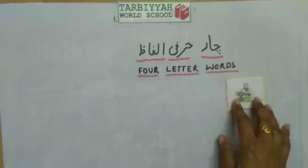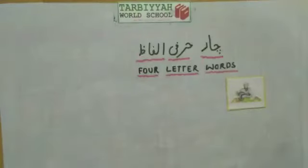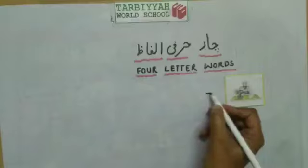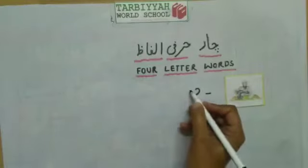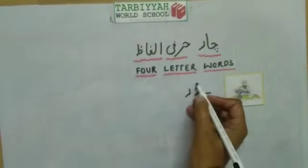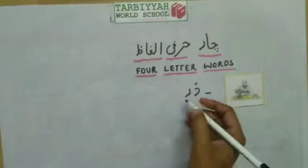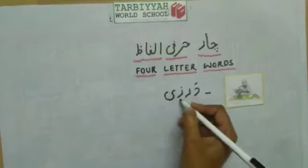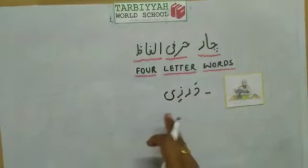Darzi is a 4 letter word. In the word darzi, it consists of 4 harfi. Da, ra, zi — Daal, Re, Zay, Yeh. See how we write the word darzi: Daal, Re — aur Daal ke upar zabar bhi lagayenge — daal zabar 'da', Re, Zay, choti Yeh — Zay ke neeche zayr — Darzi. This is how we write darzi.